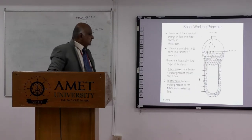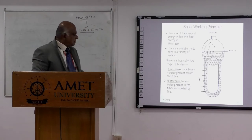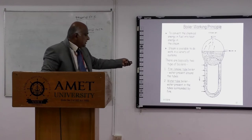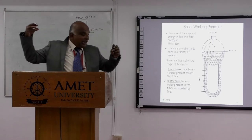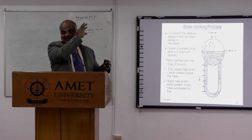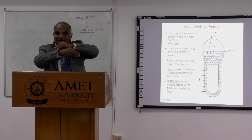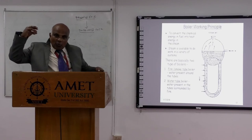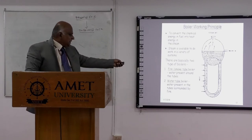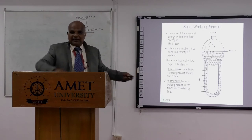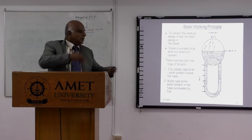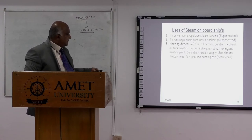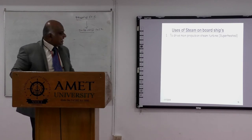There are basically two types of boilers. In a fire tube or smoke tube boiler, the flue gas passes inside the tubes and water surrounds the outside of the tubes. In a water tube boiler, water flows inside the tubes and surrounds the flue gases — so it is called a water tube boiler.